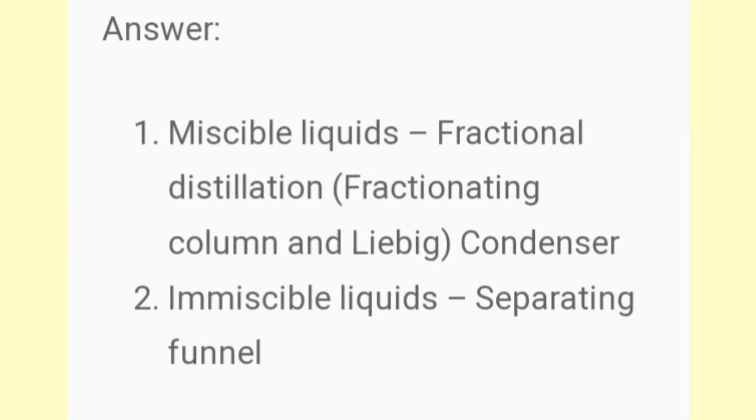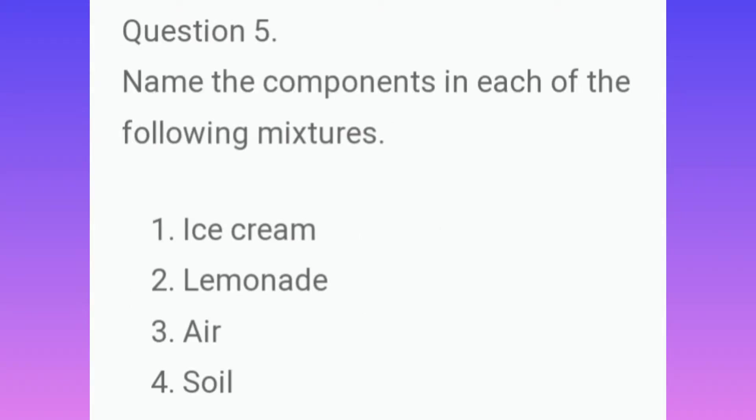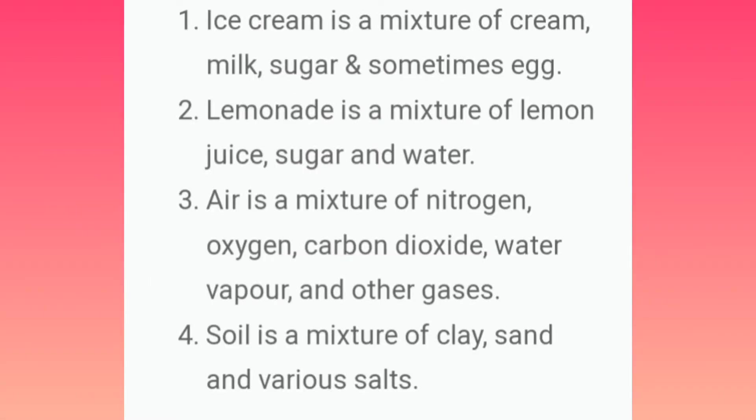Fifth question: Name the components in each of the following mixtures. First, ice cream. Second, lemonade. Third, air. Fourth, soil. Answer: First, ice cream is a mixture of cream, milk, sugar, and sometimes egg. Second, lemonade is a mixture of lemon juice, sugar, and water. Third, air is a mixture of nitrogen, oxygen, carbon dioxide, water vapor, and other gases. Fourth, soil is a mixture of clay, sand, and various salts.